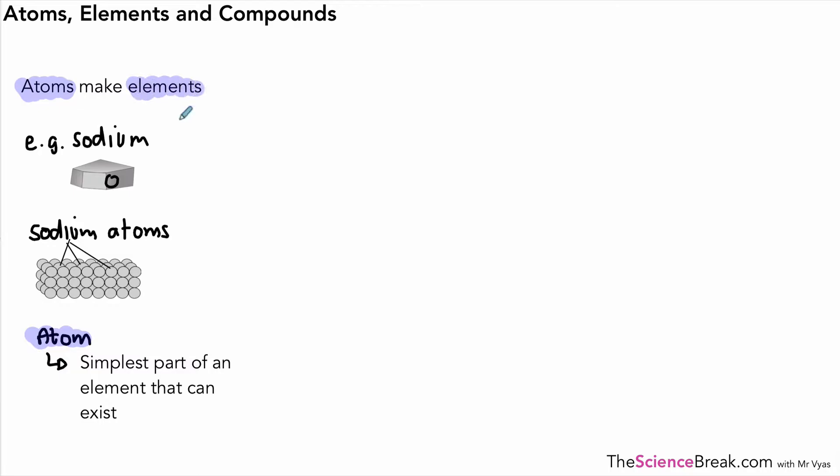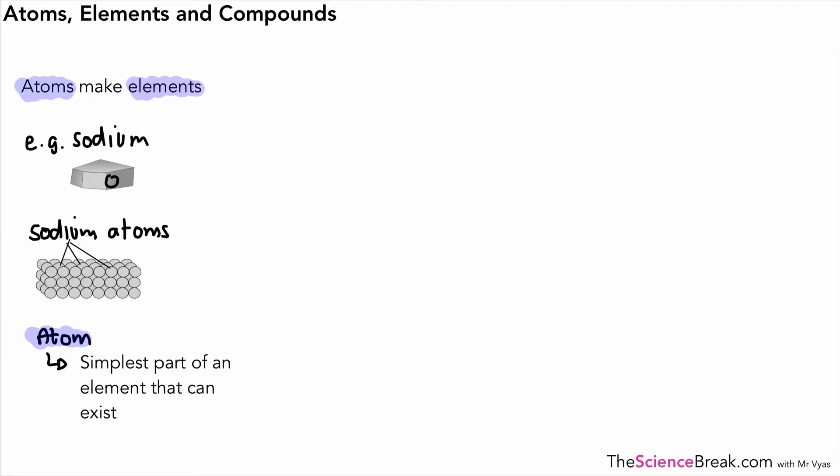They make up elements and in fact pretty much everything. Where do we find these elements? They are found on the periodic table. The periodic table is something that we will work with a lot throughout our chemistry course.